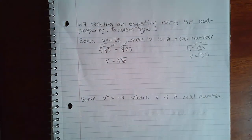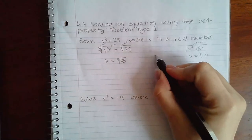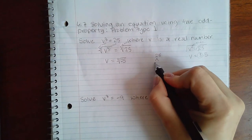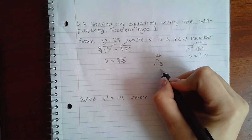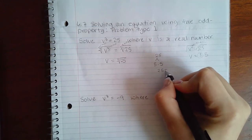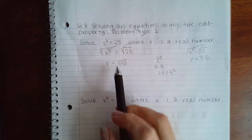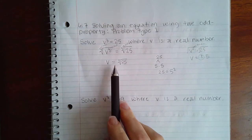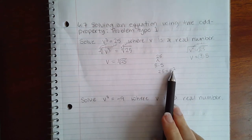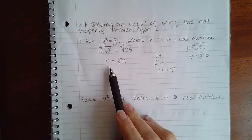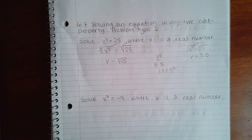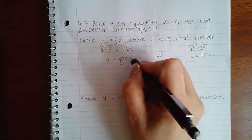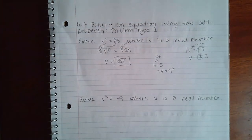Had that simplified I would have simplified it, but if you break up 25, it's 5 times 5, which means 25 equals 5². But the index is 3, so I would need three of these for one to come out and I don't have enough. So it just stays the cube root of 25. This is the actual answer, cube root of 25.